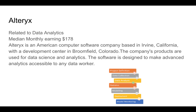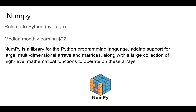Next comes Alteryx, related to data analytics. Its monthly median earning is $178, one of the highest. Alteryx is an American computer software company based in Irvine, California, with a development center in Broomfield, Colorado. The company's products are used for data science and analytics, and the software is designed to make advanced analytics accessible to any data worker. This topic is also very niche on Udemy with not more than 10 courses made.